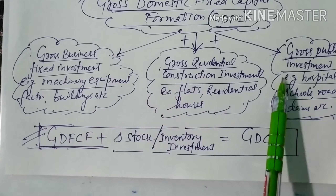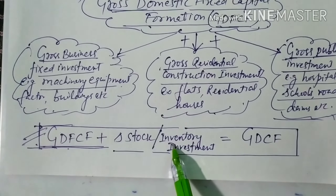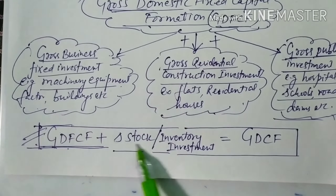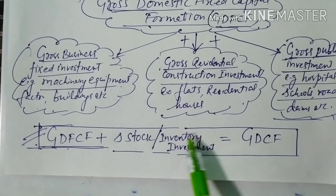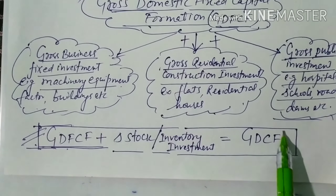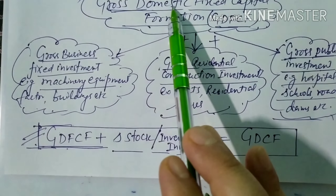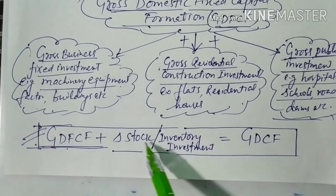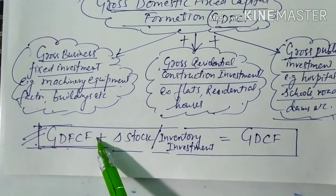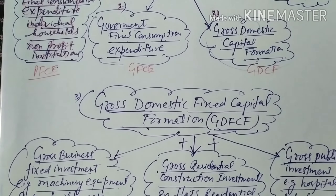If we add change in stock — closing minus opening stock — also called inventory investment, to GDFCF, we get gross domestic capital formation (GDCF). Inventory investment comprises semi-finished goods, finished goods, and raw materials. So if you are given GDFCF, add change in stock to get GDCF.